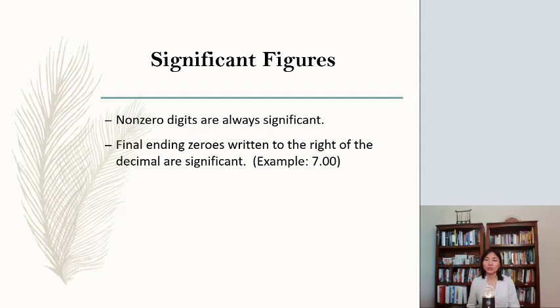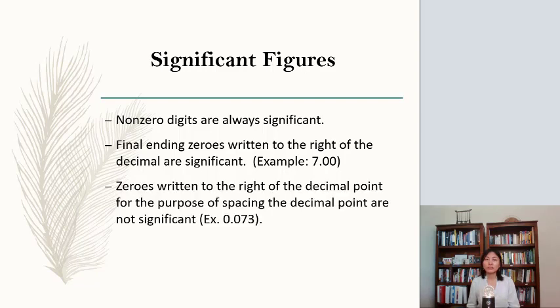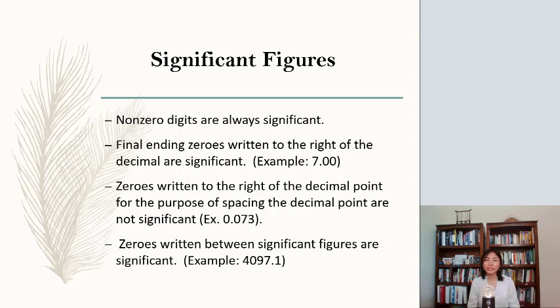Final ending zeros written to the right of the decimal are significant. For example, 7.00 has three significant figures. Zeros written to the right of the decimal point for the purpose of spacing the decimal point are not significant. For instance, 0.073 has only two significant figures. Zeros written between significant figures are significant. So those are the rules of the number of significant figures.